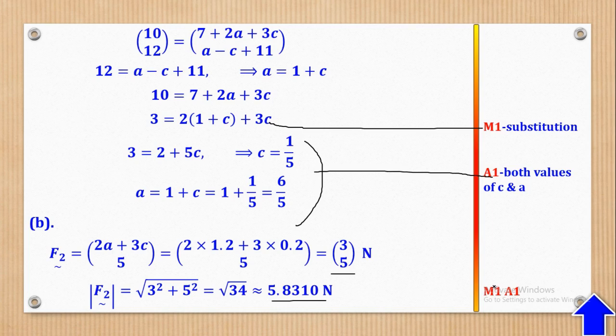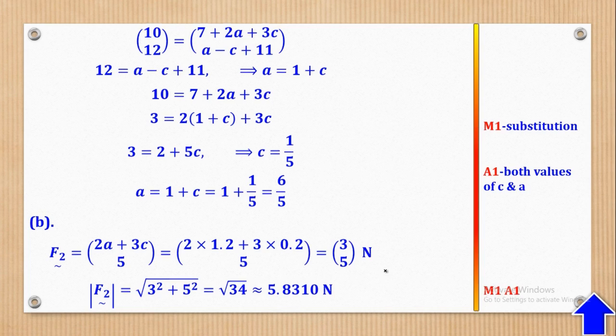M1 is for substitution of A, and A1 is for getting both the value of C and value of A. M1 is for substituting in Pythagoras' theorem, and A1 is for getting the output. That's how the marks would be awarded.